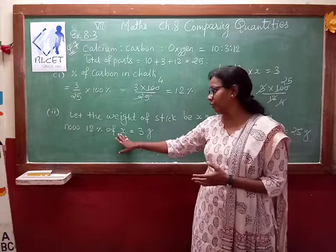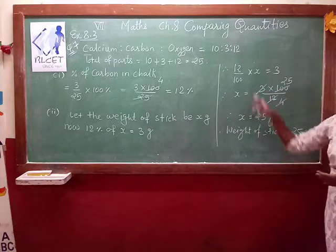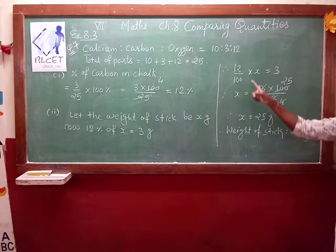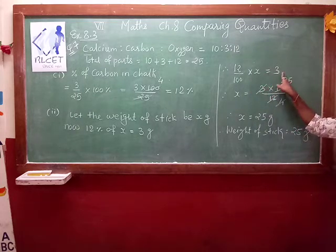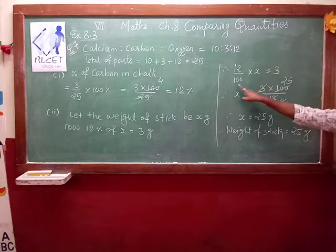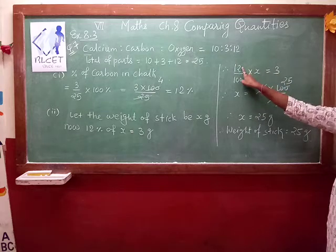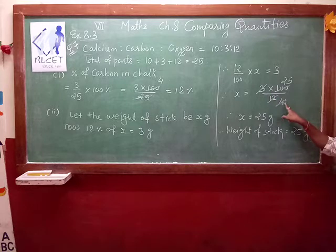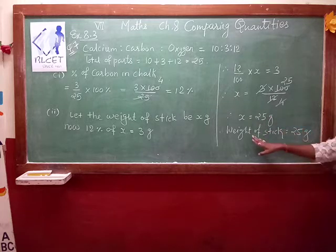Part is given and total we want to find. So, 12 percent of x is equal to 3 grams. Solve this: 12 divided by 100 multiplied by x — whenever you remove the percentage sign, you divide the term by 100. So 12 divided by 100 multiplied by x equals 3. Therefore x equals 3 multiplied by 100 divided by 12. 4's are 12, and 25's are 100. So x equals 25 grams. Weight of the chalk stick is 25 grams.